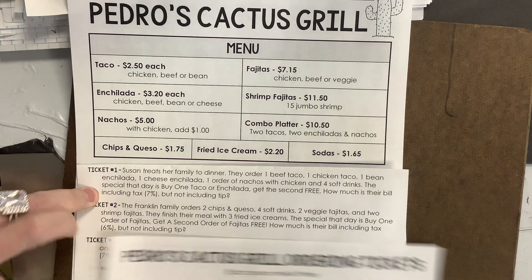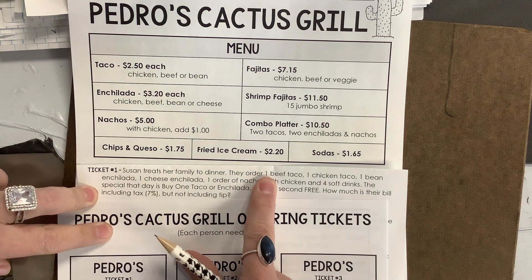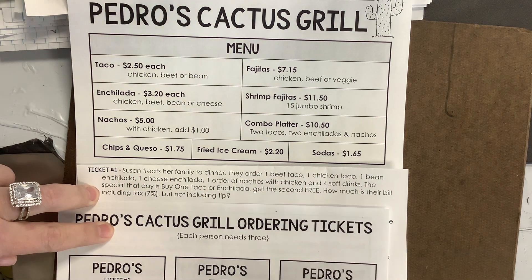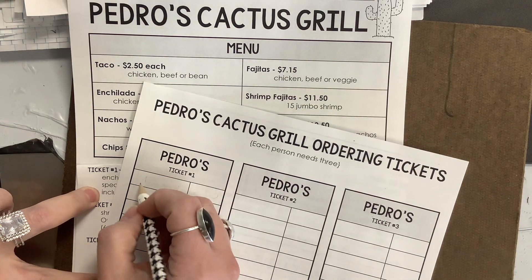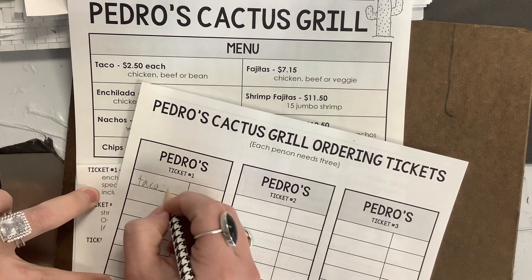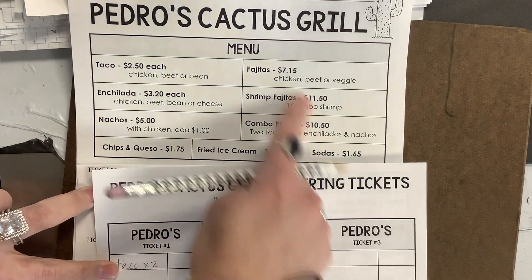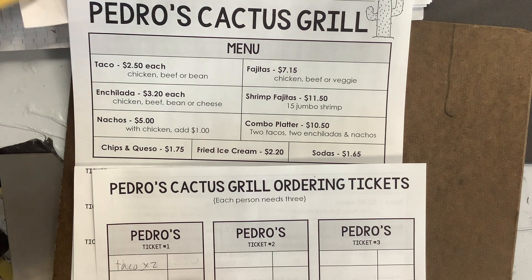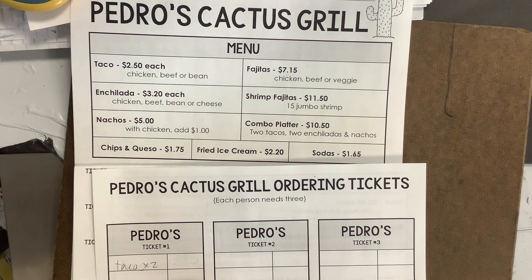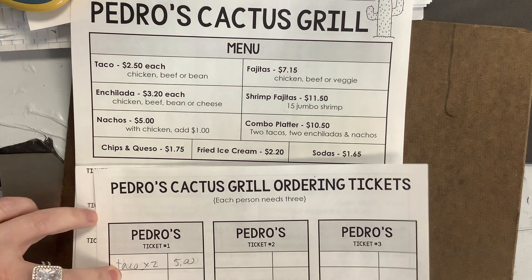So this says: Susan treats her family to dinner. They order one beef taco and one chicken taco. So if I was filling this out, I'd put tacos times two. A taco is $2.50 each, so two tacos is going to be $5.00.